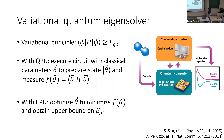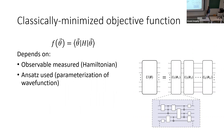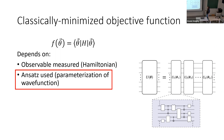VQE is a classical-quantum hybrid algorithm: the quantum computer executes a circuit with classical parameters to prepare a parameterized state, we do measurements to compute expectation values of the Hamiltonian, and that information is sent to a classical computer which optimizes these parameters to obtain an upper bound on the ground state energy. The objective function depends on the observable (the Hamiltonian) and the ansatz — the parameterization of the wave function. Any approach to improve VQE performance needs to focus on the ansatz itself.